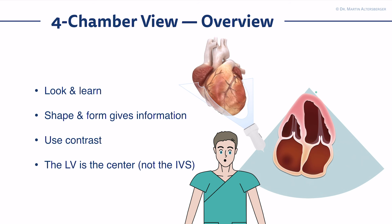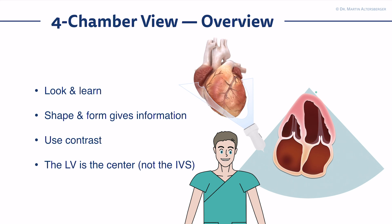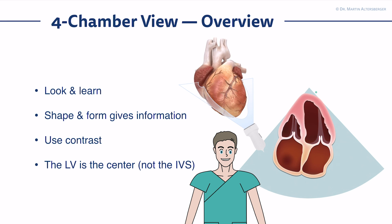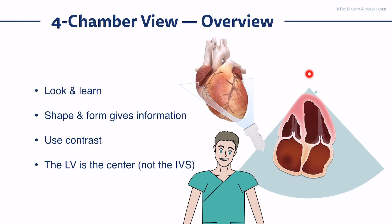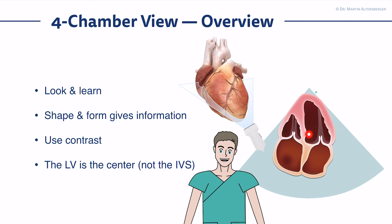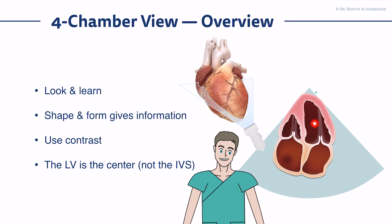Very important for future views: keep the left ventricle in the center. If you want to go to a two-chamber view and an apical long axis view, keep the left ventricle in the center — not, as is sometimes written, the interventricular septum. Because if you rotate around the septum, you will always lose the chamber. But if you have the chamber in the center and rotate counterclockwise 60 to 90 degrees, you will always get the left ventricle and left atrium in your field of view.